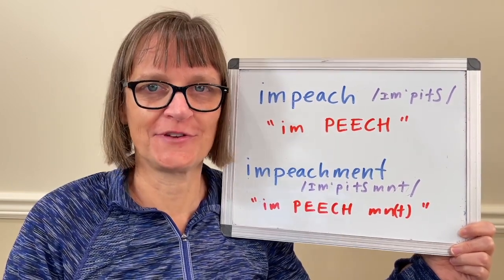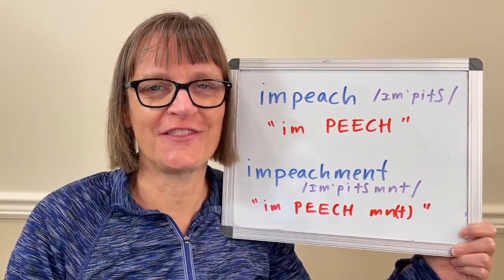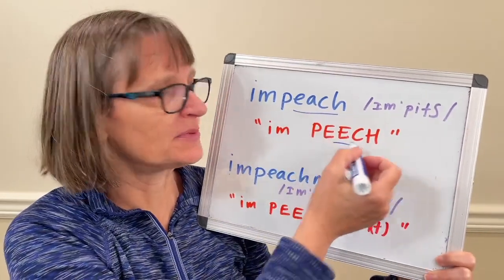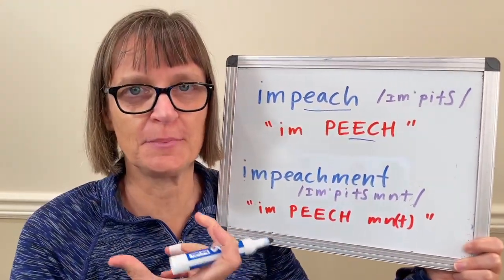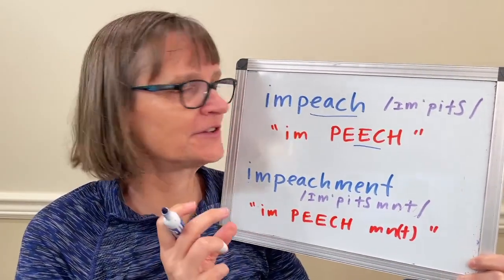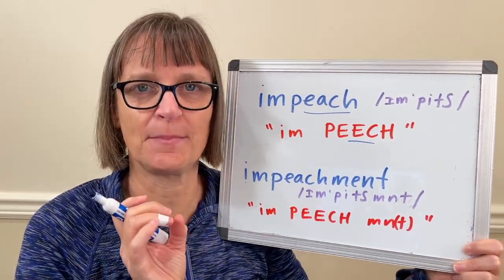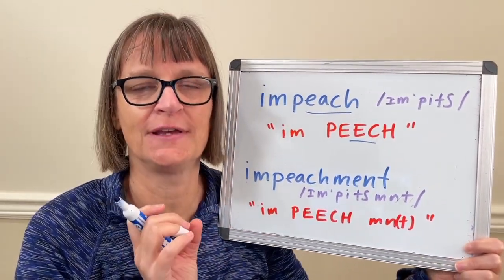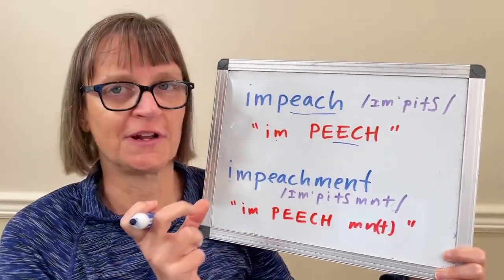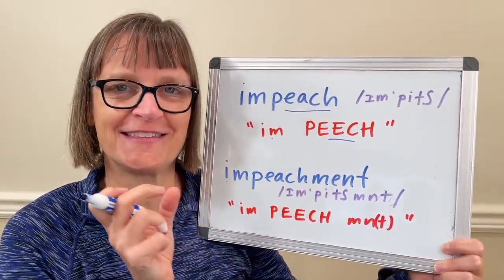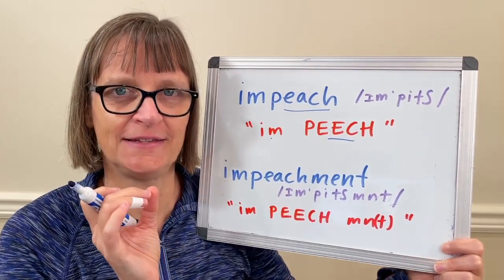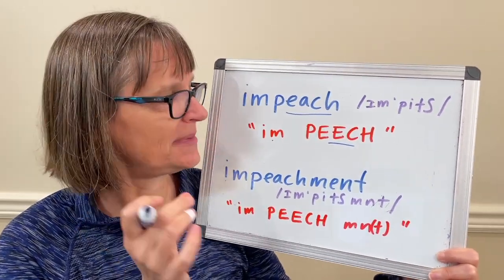The stress in 'impeach' falls on the second syllable, 'peach,' and it's pronounced just the same as the fruit, 'peach.' It has the clear E-vowel, and the letters C-H say the 'ch' sound — peach, impeach. The first syllable will be short and unstressed, and it has the I-vowel like in 'it' or 'did' — impeach, impeach.